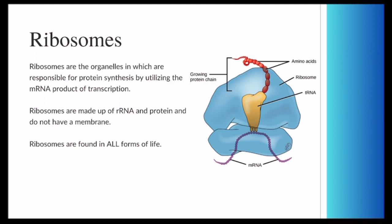The first organelle we're going to be going over is a ribosome. This is not membrane bound. They're found in all forms of life, whether it's eukaryotic cells, prokaryotic cells, animal cells, or plant cells. They're basically responsible for protein synthesis, in which it uses the mRNA to create a protein chain. They're composed of RNA and protein.